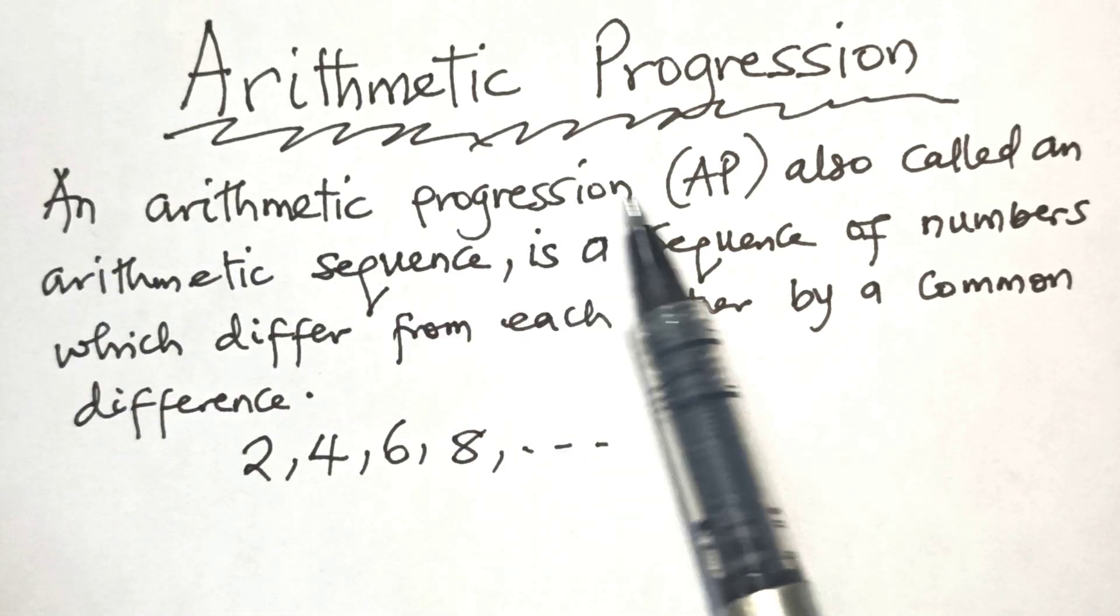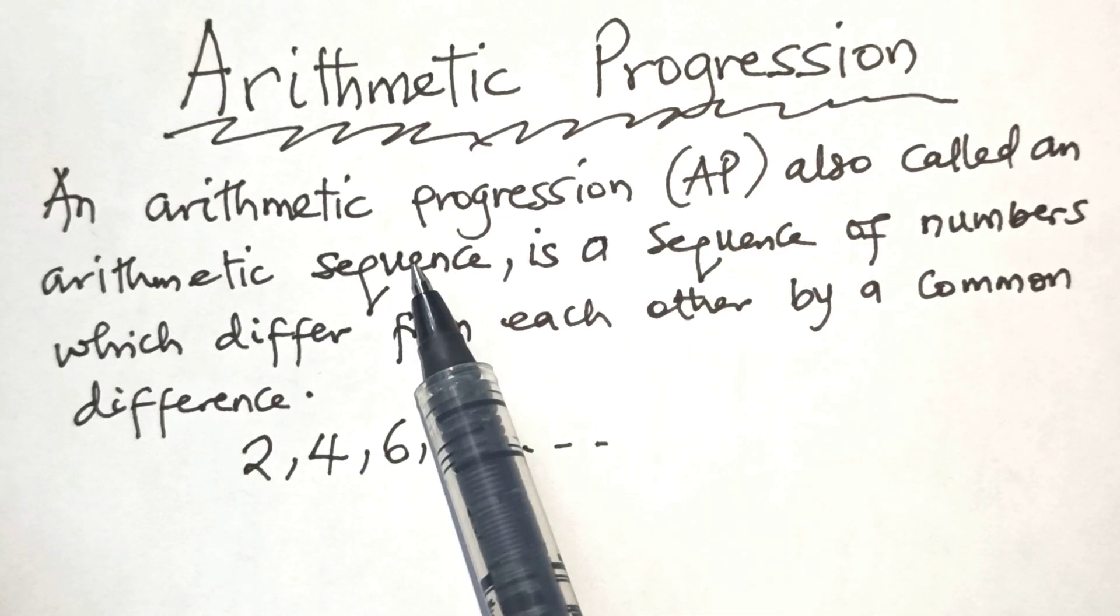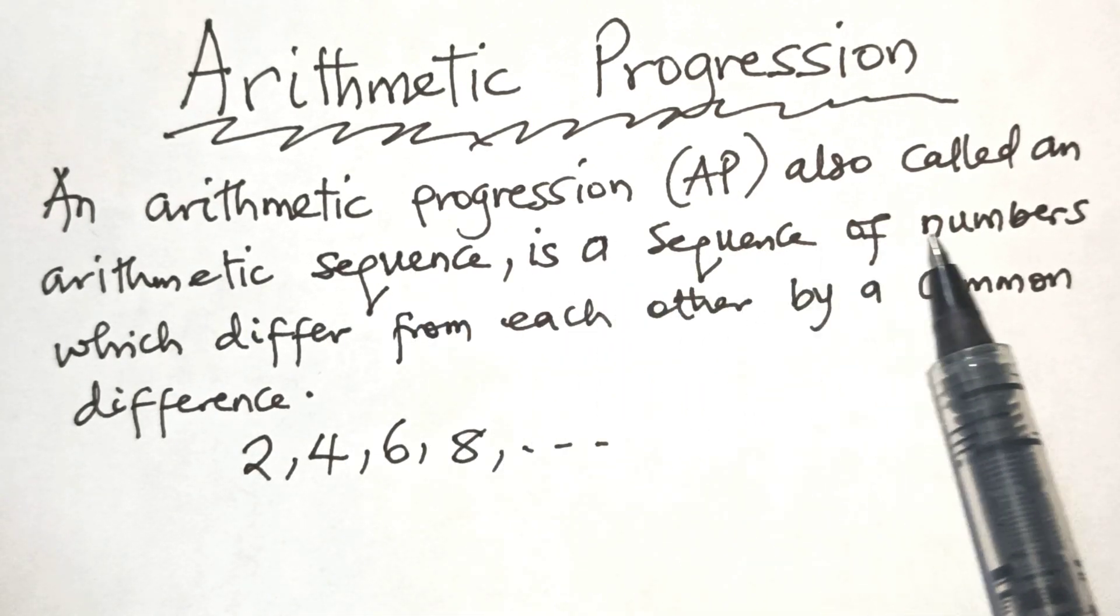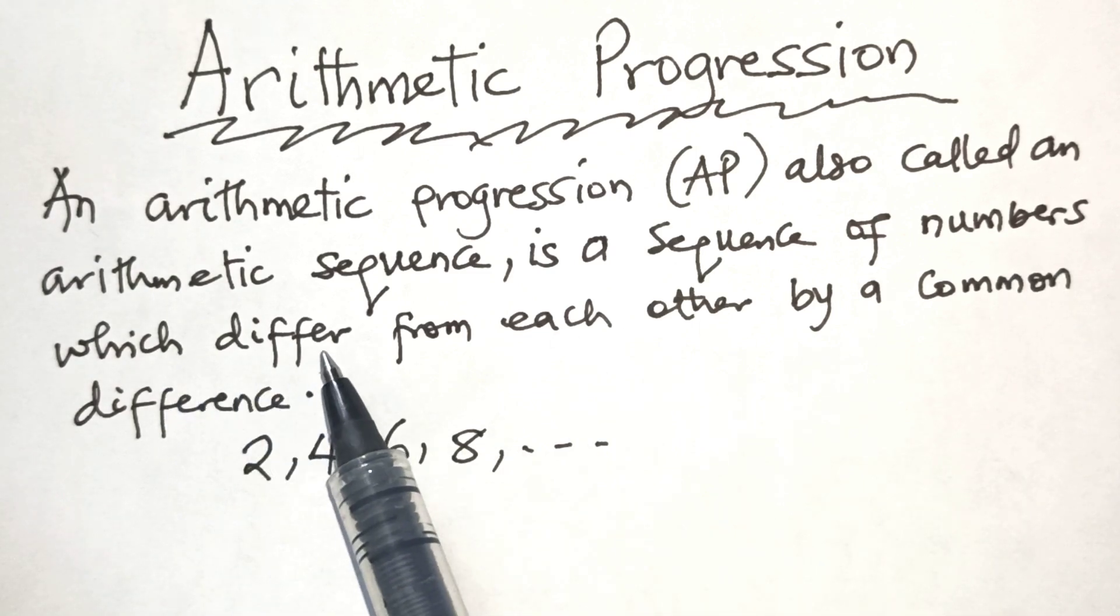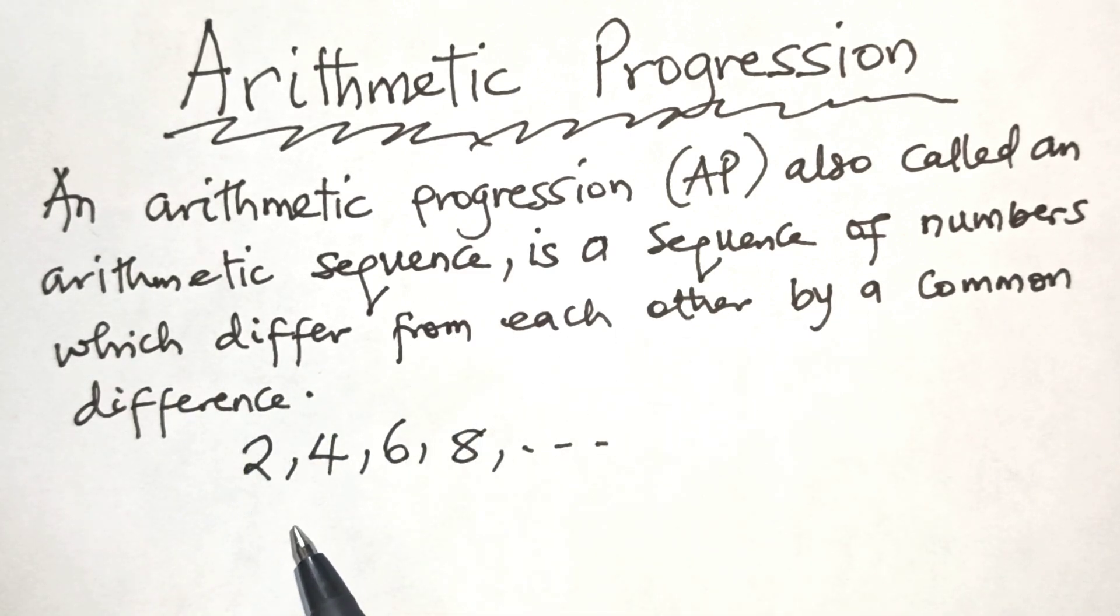An arithmetic progression, AP, also called an arithmetic sequence, is a sequence of numbers which differ from each other by a common difference. For instance, the sequence 2, 4, 6, 8, and so on is an arithmetic sequence.